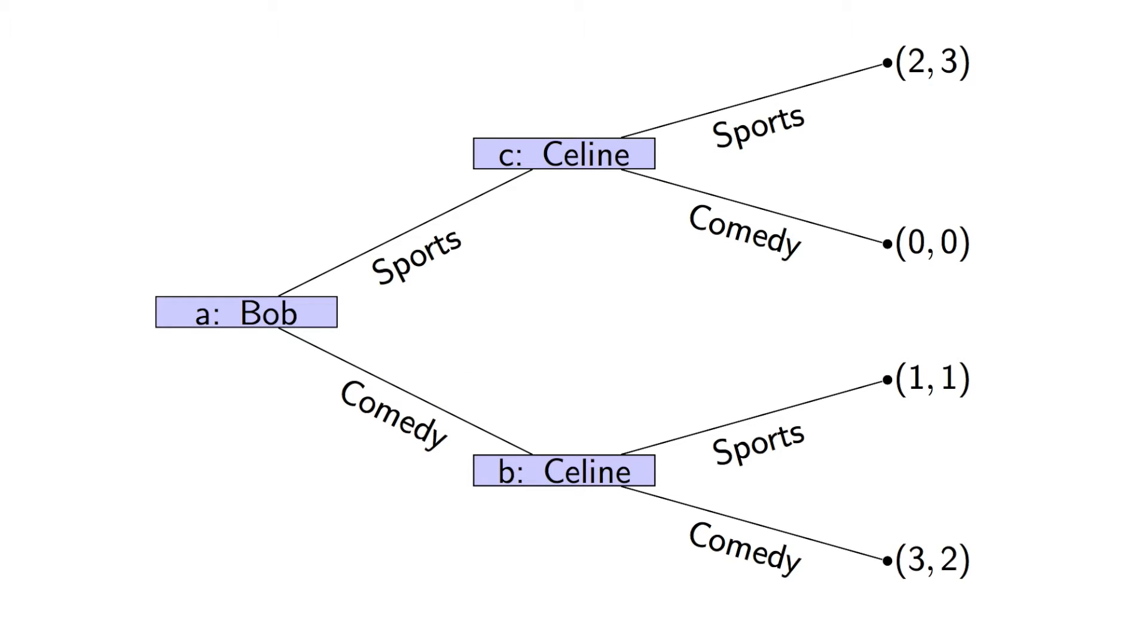An extensive form game is defined on a tree where our nodes represent decisions made by players, and these nodes can live in information sets. For example, if there was a dotted line between these two nodes, that would mean that Selene had the same amount of information at either.